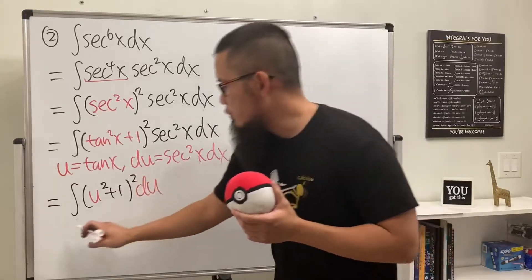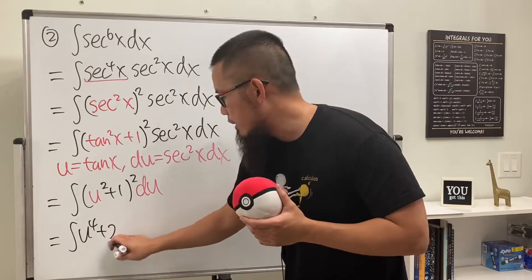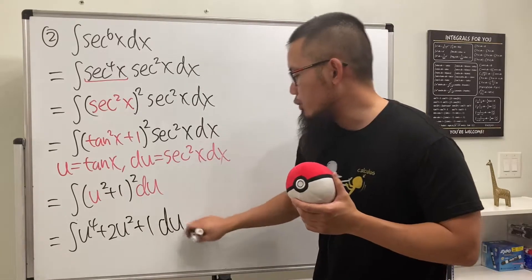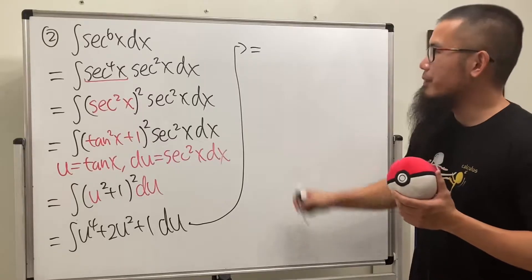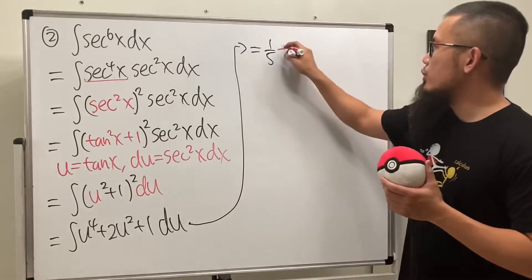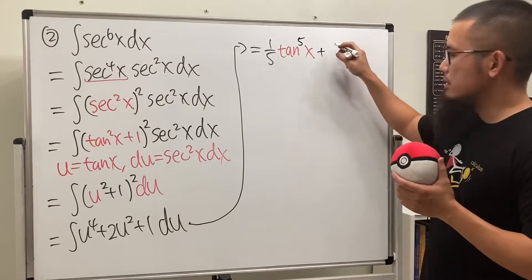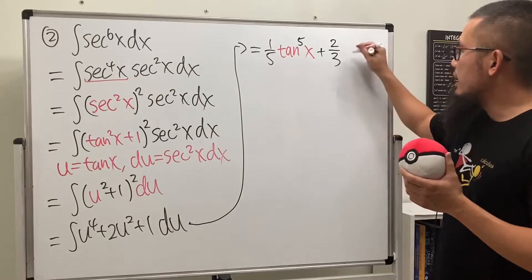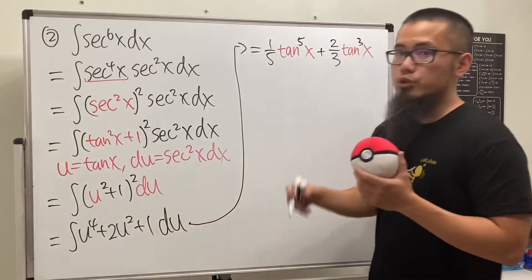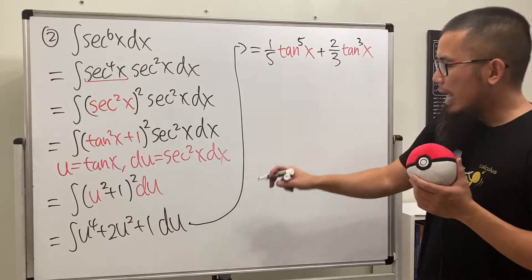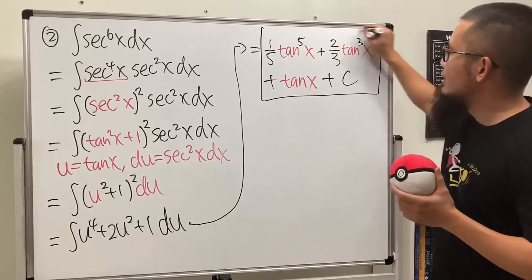So we are integrating (u squared plus 1) squared du. Expanding, we get u to the fourth plus 2u squared plus 1 du. Integrating term by term: one fifth u to the fifth — where u is tangent x — gives us (1/5) tangent⁵x, plus (2/3) tangent³x, plus tangent x, plus C. That's the answer for number 2.